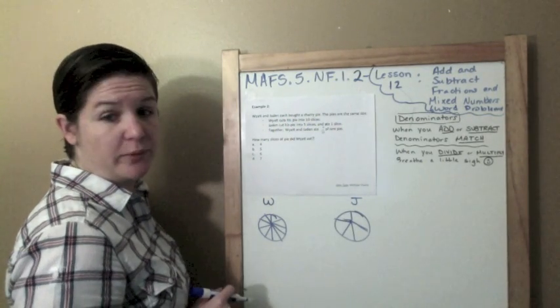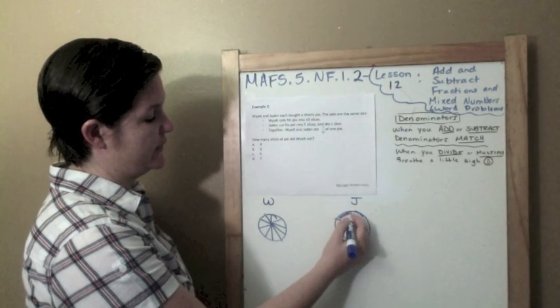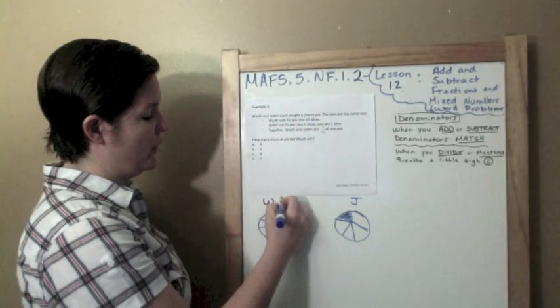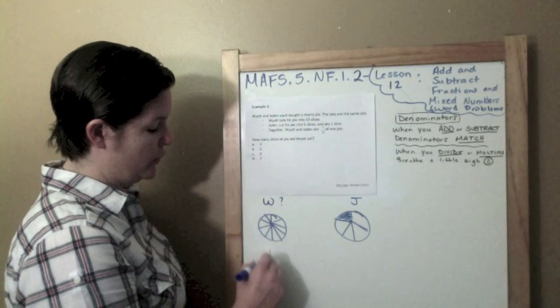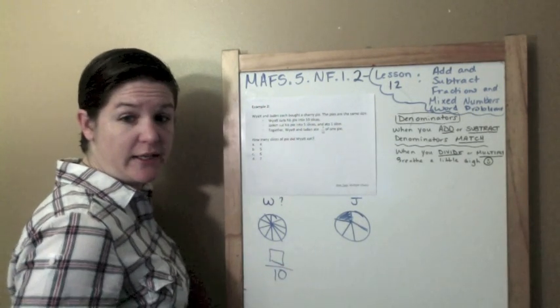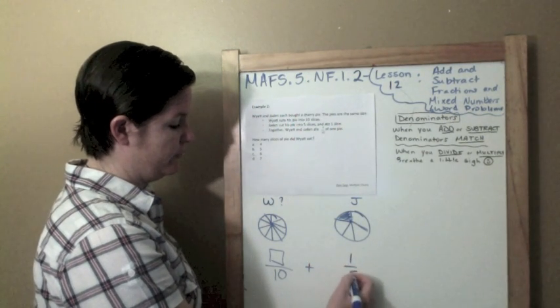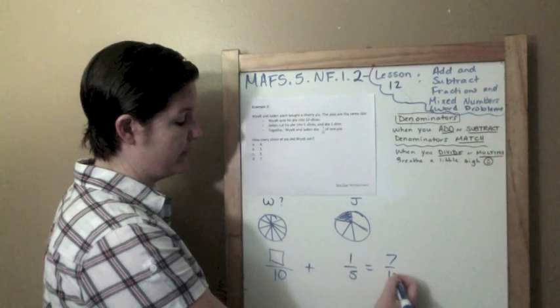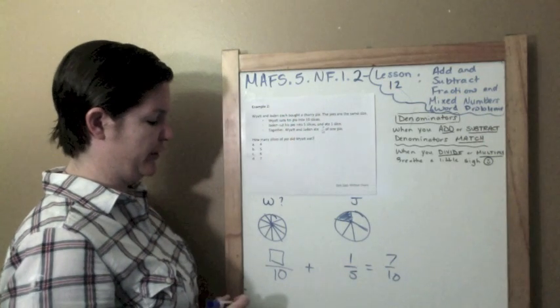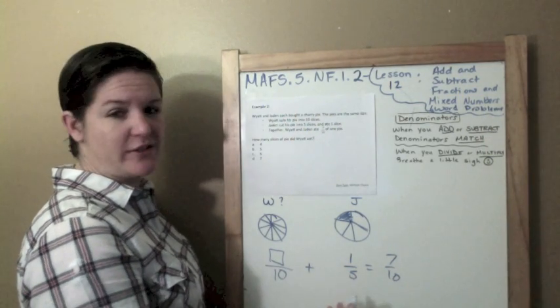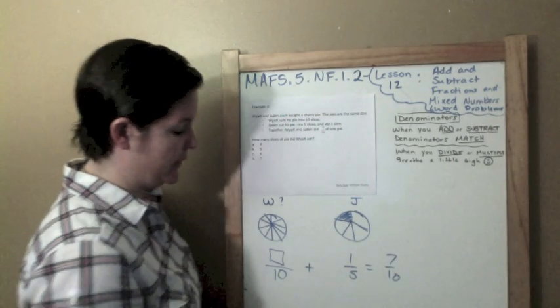They each bought a cherry pie. So, we have Wyatt and we have Jayden. We know Wyatt cut his pie into 10 slices. These are not very equal slices, but I want you to use your amazing imaginations, friends, and imagine that they are equal. Just visualizing a little bit. All right. We know that Jayden had 1 slice. We don't know how much Wyatt has, but together they ate 7/10.